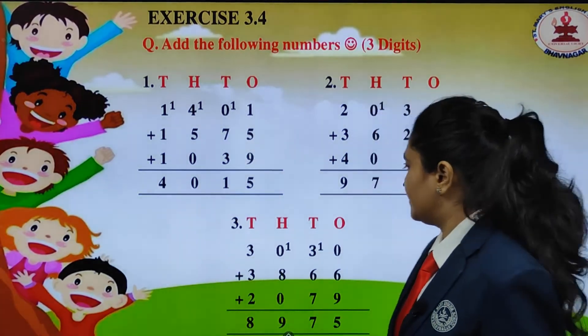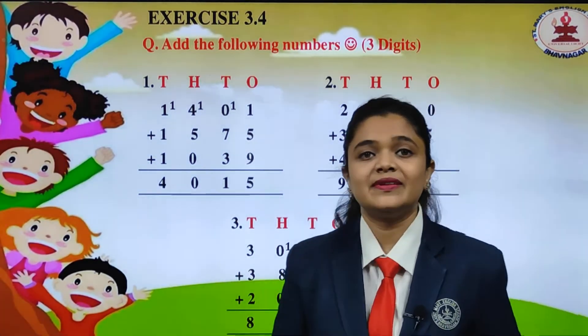Now we will add it. 0 plus 6, what we will get? 6. 6 plus 9, we will get 15. So 1 carry and 5 down. Here we have carried 1. In which place value we will carry? We will carry in tens place value.